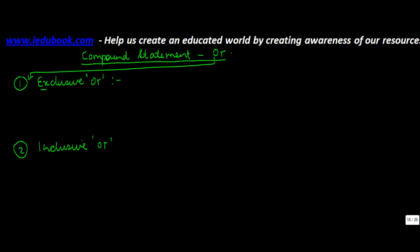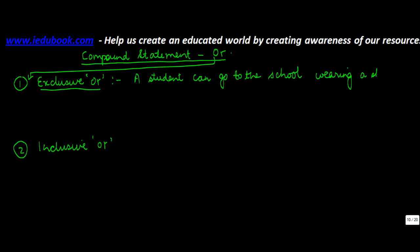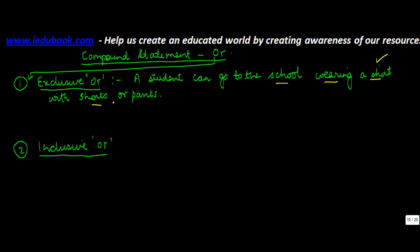Let's look at this. A student can go to the school wearing a shirt with shorts or pants. This statement tells you that a student can go to school wearing a shirt — so a shirt is something which has to be worn — and with the shirt he can wear either shorts or pants.